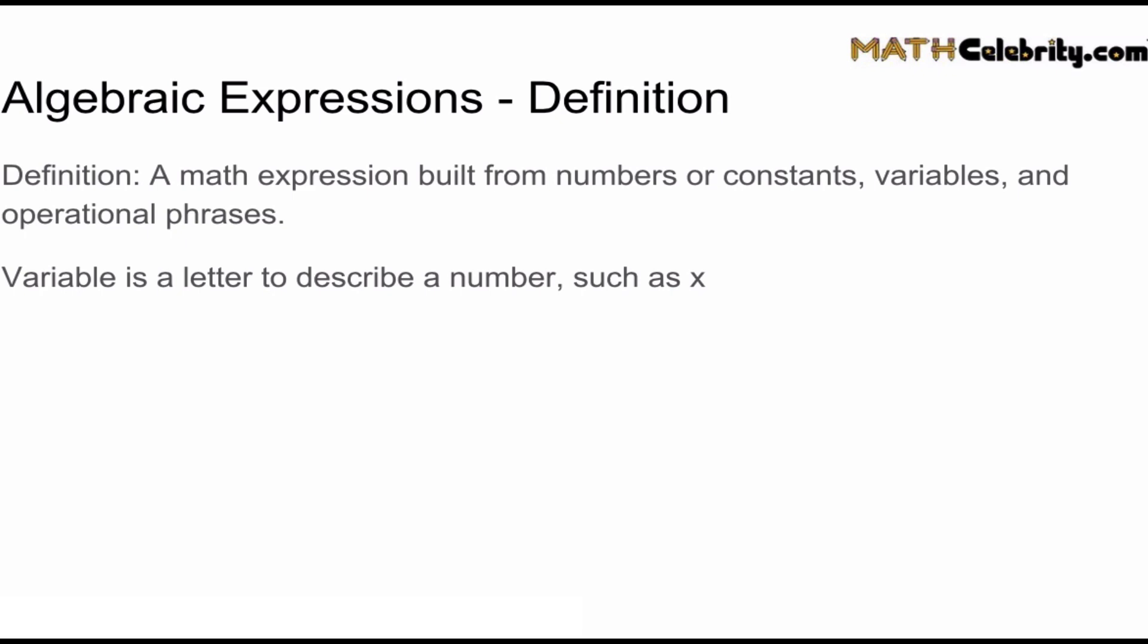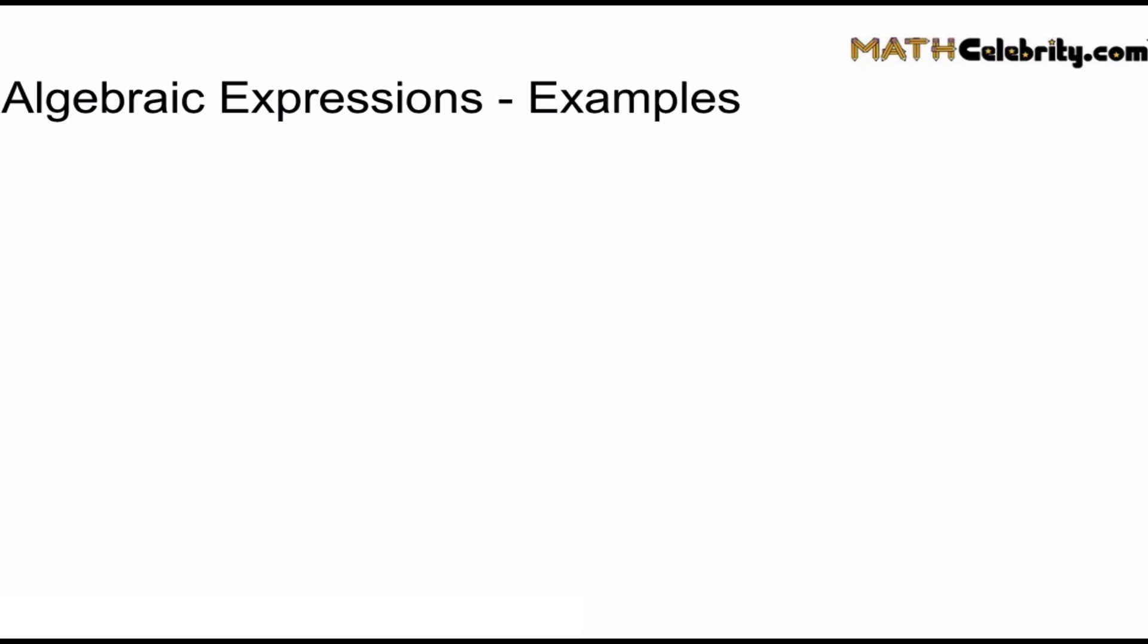And an example of a common variable in math is x. Now let's look at some example algebraic expressions, and then I'll show you how we build these. x plus 2, 3 times y minus 8, the quotient of x and 5, 5 plus a number, 5 plus twice a number.